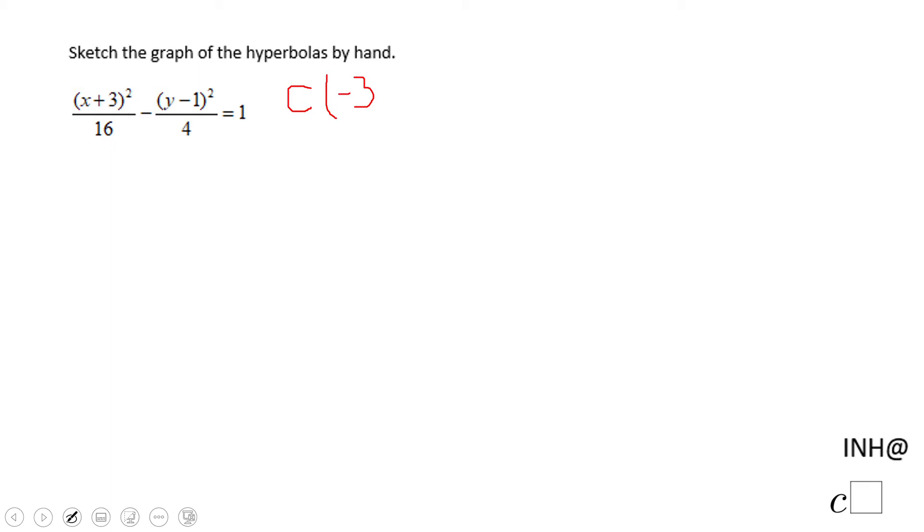On an x and y axis, I'm going to plot that center: negative 3 and 1. That means go three left, one up. That's the center. Now the next thing we need to take a look at is the form of this hyperbola, which is like x squared minus y squared.